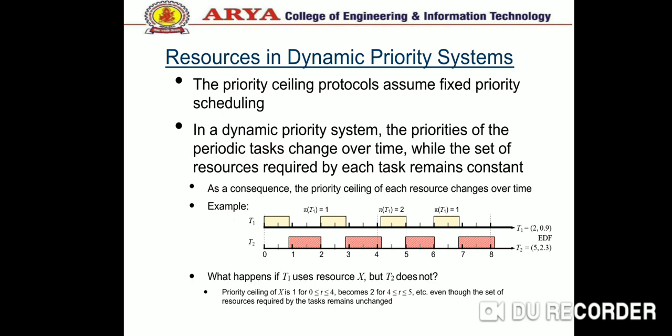The allocation rule is: whenever a job requests a resource, it is allocated the resource. Resources in a dynamic priority system: the priority ceiling protocol assumes fixed priority scheduling. In a dynamic priority system, the priorities of tasks change over time while the set of resources required by each task remains constant. Here is an example of a dynamic priority system.